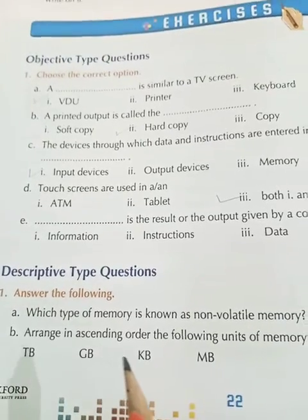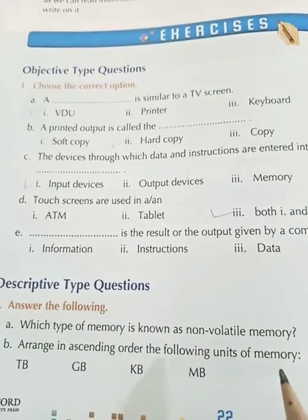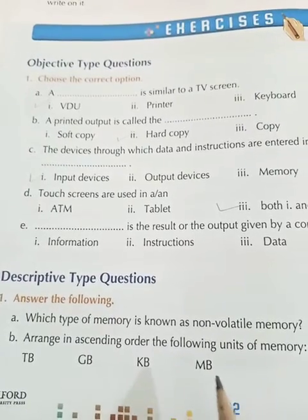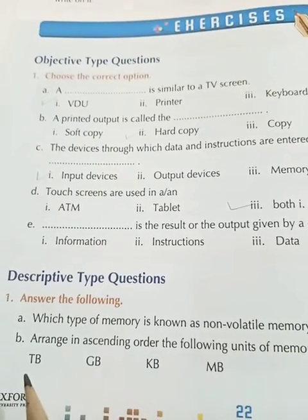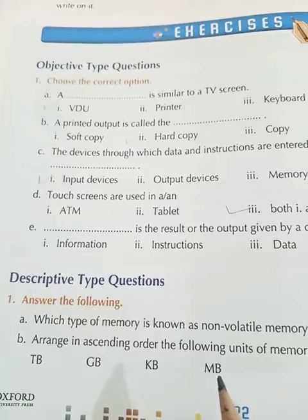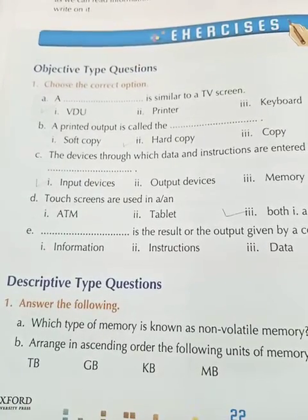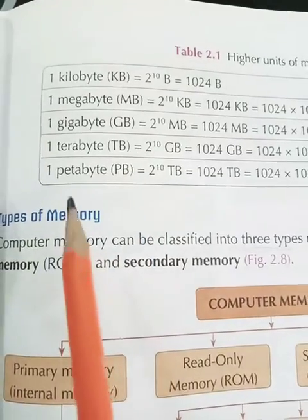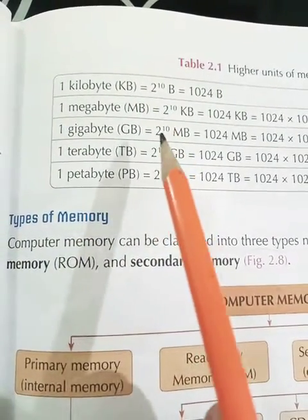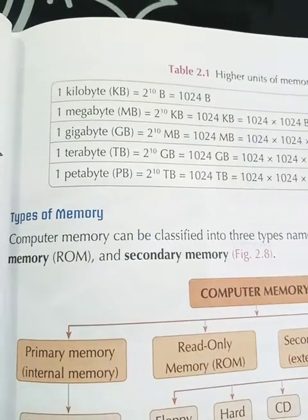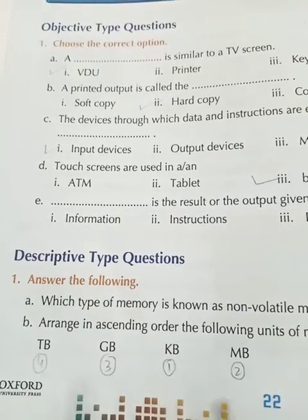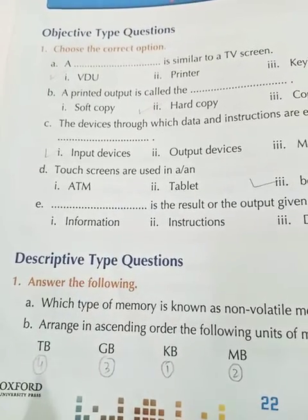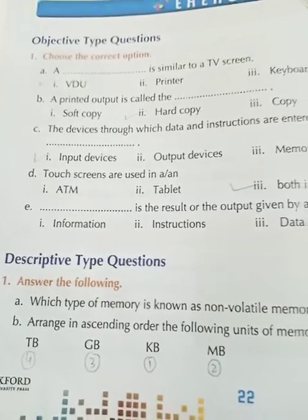Part B: Arrange in ascending order the following units of memory — TB, GB, KB, MB. These are terabyte, gigabyte, kilobyte, and megabyte. We refer to the memory chart. The ascending order is: KB, MB, GB, TB — that is kilobyte, megabyte, gigabyte, and terabyte.